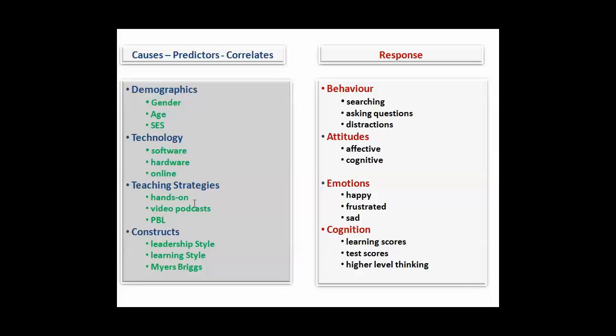You might want to look at that and students' attitudes towards that technology, or attitudes towards learning, or attitudes towards the subject area, and perhaps learning scores, or test scores, and outcomes. That's the kind of structure that most research questions follow in educational technology.